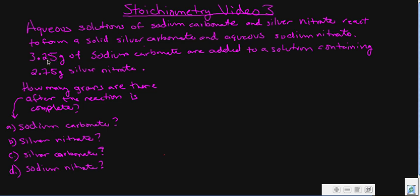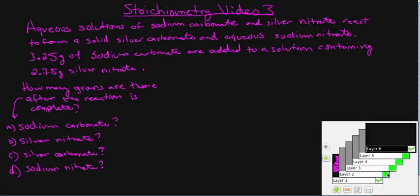Anytime a stoichiometry problem gives you two masses — or two amounts — that are put in (could be moles or even an amount of particles), you're going to end up with a limiting reactant and an excess reactant. One of these is going to run out first, and we won't know which one until we convert everything to moles.